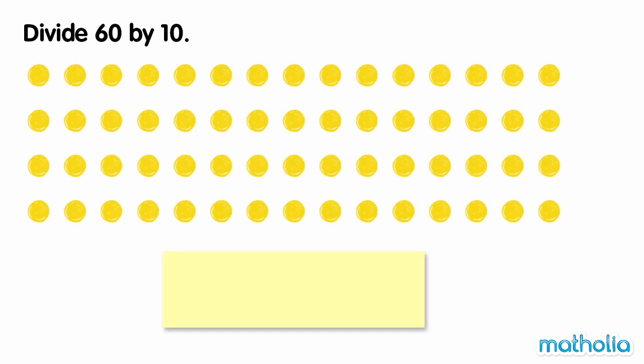Divide 60 by 10. There are 60 dots. To divide by 10, let's make groups of 10 dots and then count the total number of groups.